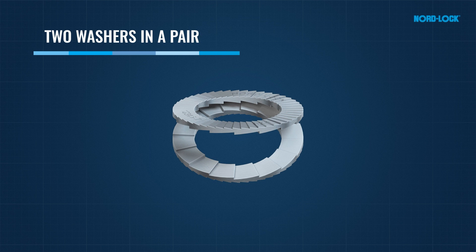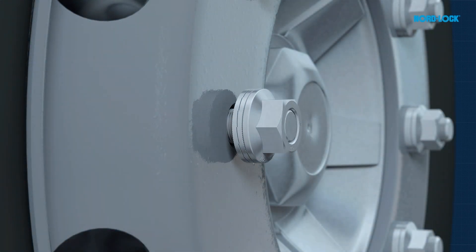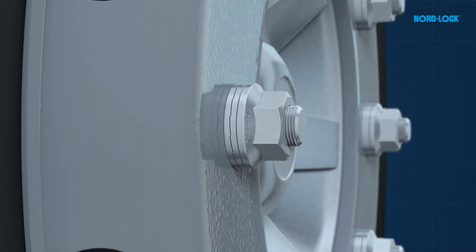The identical washers have cams on one side facing each other and serrations on the opposite side. The solution secures the bolted connection with tension instead of friction.